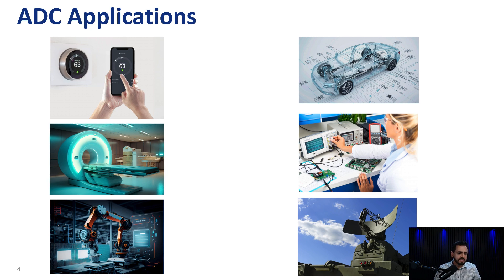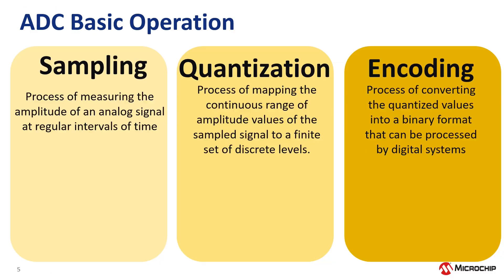As you can see, ADCs can be found in many different applications. There are different ADC architectures with different advantages and features that can cater to different needs. Now, let's talk about ADC basic operation. As we mentioned before, an ADC is an electronic device that converts an analog signal into a digital signal. This is usually done in three different steps, as shown in this slide: sampling, quantization, and encoding, from left to right.